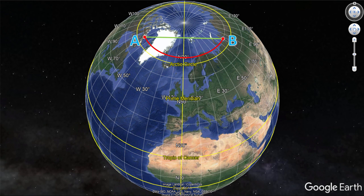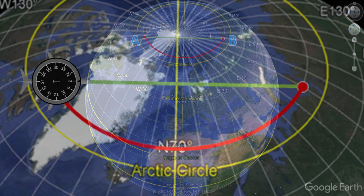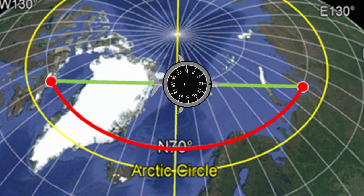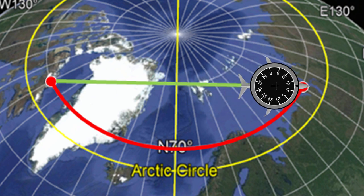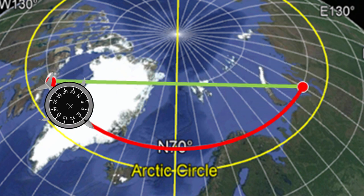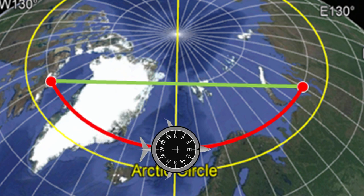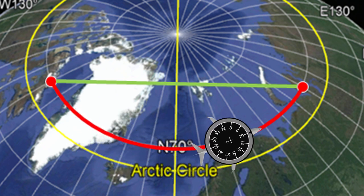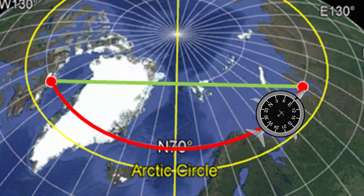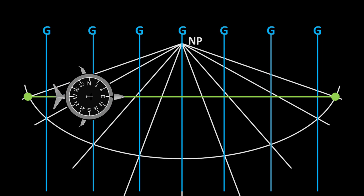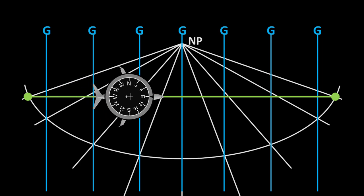A detailed explanation on Great Circle is in another video, with a link available on the top right corner of the screen and in the description. As you can see in the animation, the compass reading is continually changing when we travel from A to B. To solve the problem of changing true course, we can use a rhumb line track represented by the red line. However, this track is longer compared to the Great Circle Track, making it uneconomical.